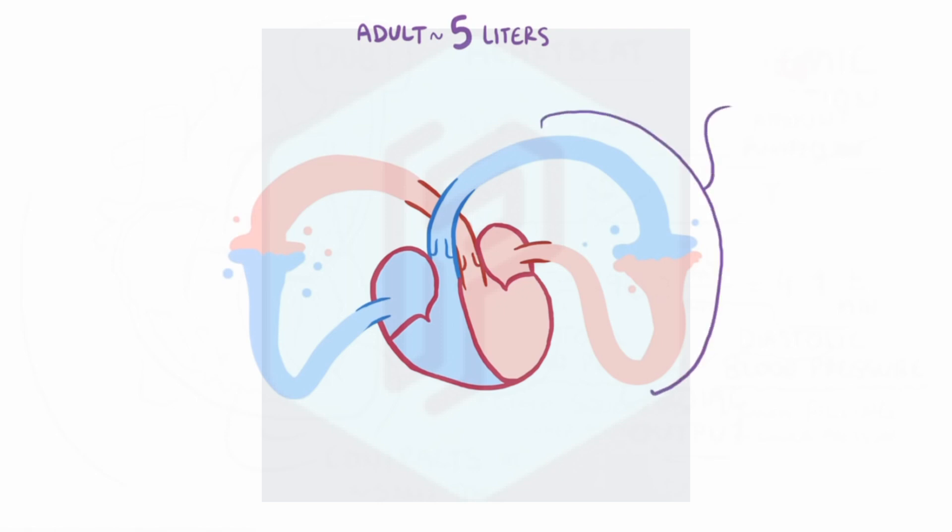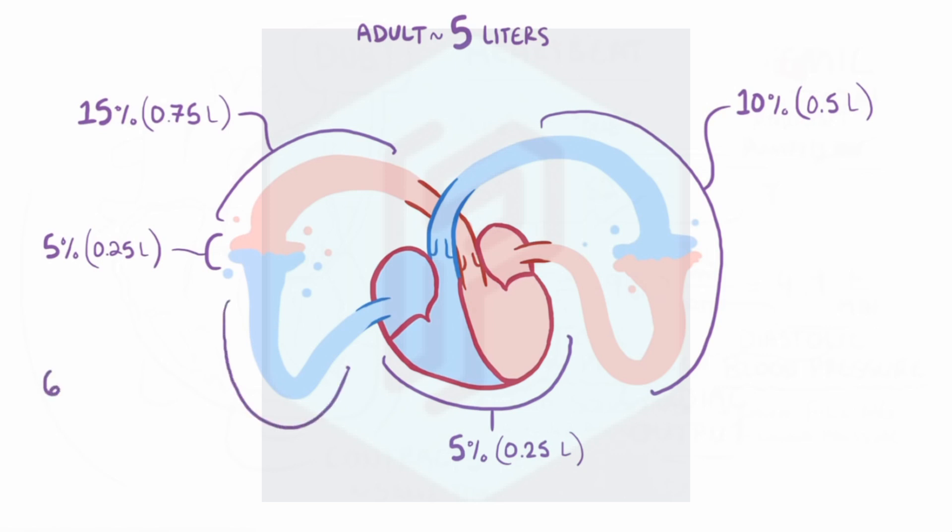Now in an average adult there's about 5 liters of blood total in the body, which just to be clear is different from the cardiac output we just found, which was amount pumped per minute. Now taking this total volume, 10% of that, or about 0.5 liters, is in the pulmonary arteries, capillaries, and veins, which make up the pulmonic circulation. And 5%, about 0.25 liters, is in one of the 4 chambers of the heart itself. Another 15%, or 0.75 liters, is in the systemic arteries traveling away from the heart. 5%, or 0.25 liters, is in the systemic capillaries, and the remaining 65%, or 3.25 liters, is in the systemic veins returning to the heart.